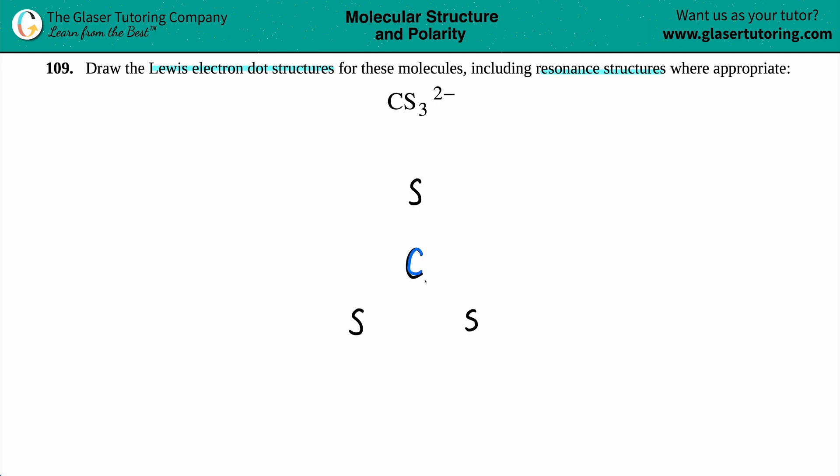Now let's start making our dots. Carbon is in group 4A or 14 on the periodic table, so it's got four dots. And each sulfur is in group 6A or 16 on the periodic table, so the lucky number is six. So each sulfur will have six electrons.